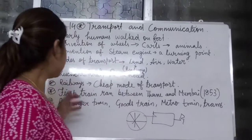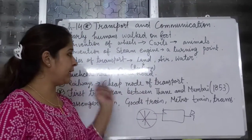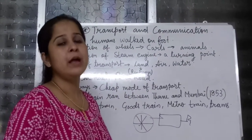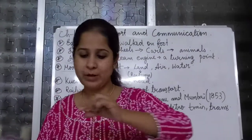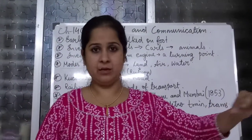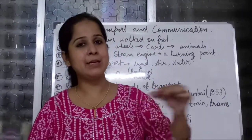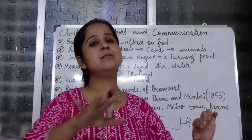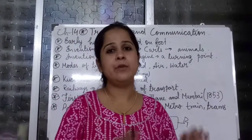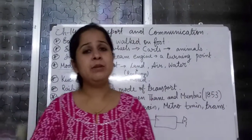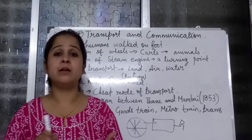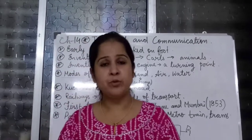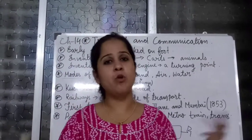Next is railways. Railways is one of the road transport means, where a proper rail line or railway track is in place on which the train runs. Railways are again of different types: the tram, the metro rail, and the common railways.